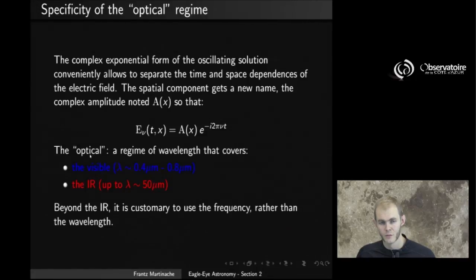There's a couple specificities associated to the fact that we work in the optical as well. The optical is a regime of wavelength that roughly covers what we call the visible, which is the window of wavelength over which our eye is sensitive, that roughly covers about 0.4 to 0.8 microns in wavelength, and the infrared, which is a band that goes beyond 0.8 microns that, depending on what sets the limit, can go as up to about 100, between 100 and maybe 50 microns. Beyond that wavelength, beyond the infrared limit, it's customary to use the frequency of the light rather than the wavelength to characterize it.